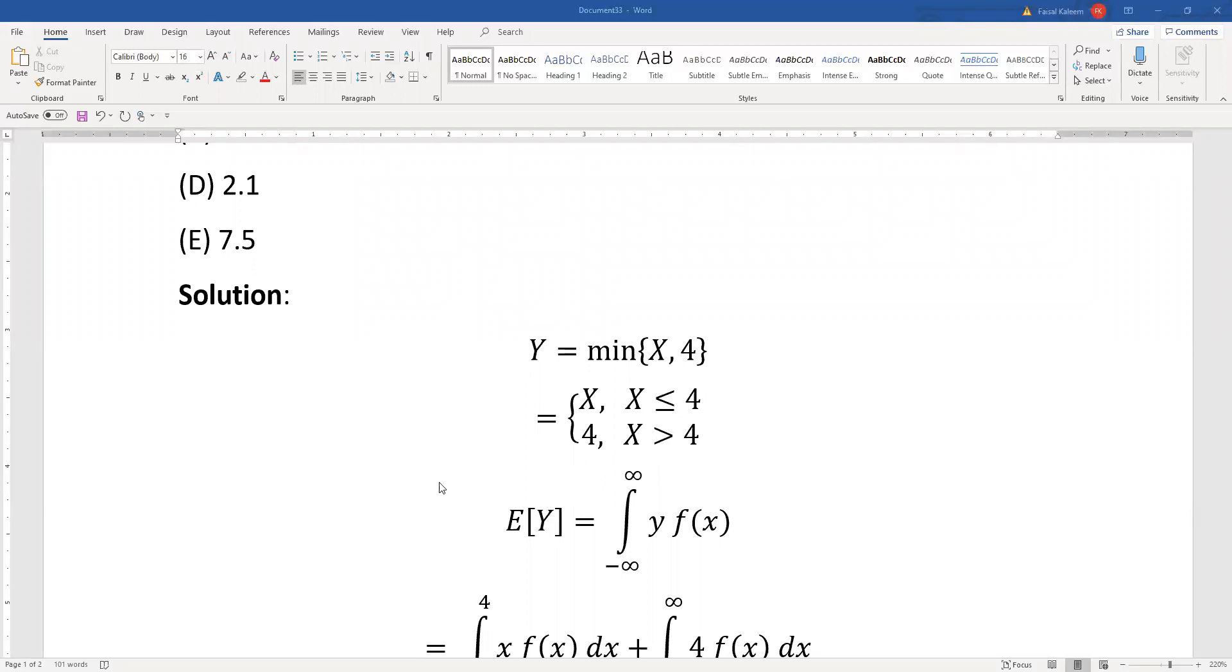To find the variance you need the expected value of y and expected value of y squared. E[y] is the integral of y f(x). Normally it should be integral of y f(y), but since y will be changed in terms of x, this is fine.